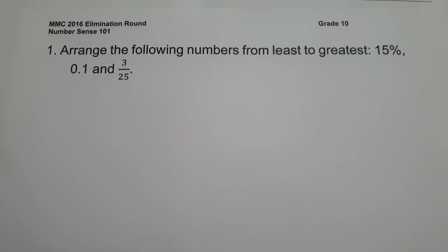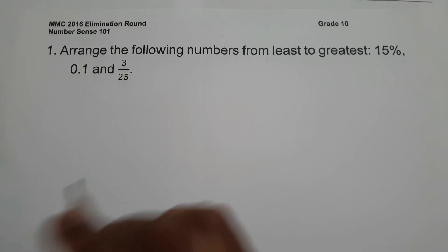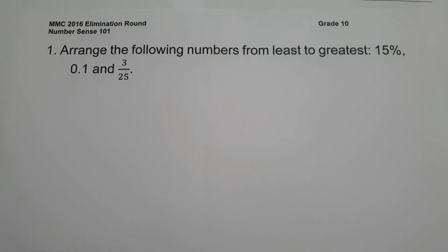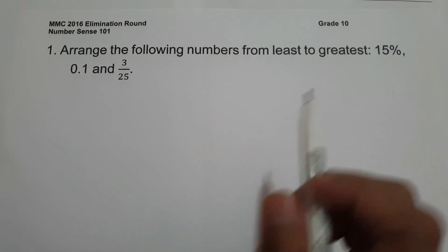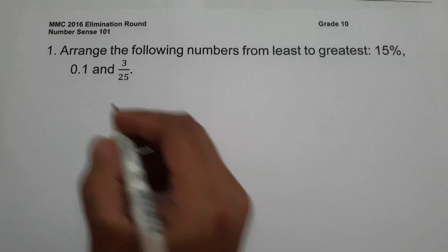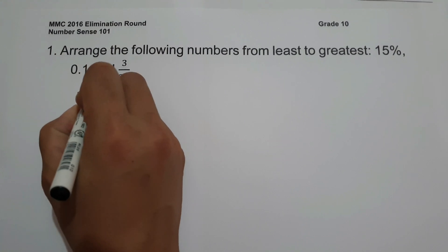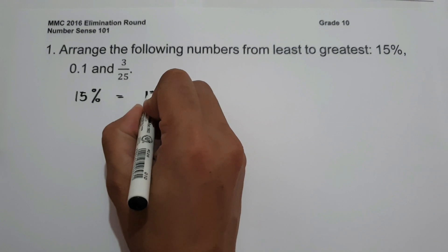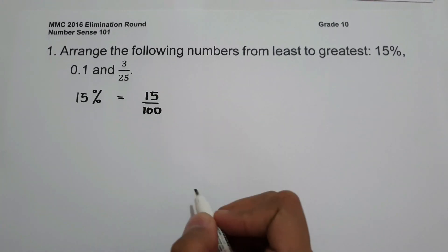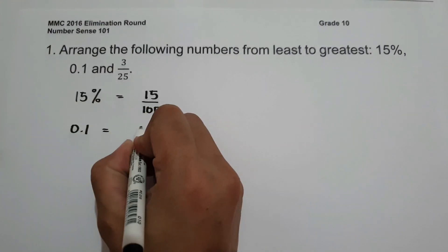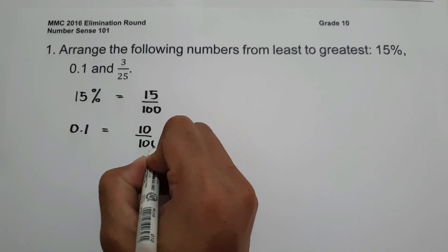On number 1, arrange the following numbers from least to greatest: 15%, 0.1, and 3 over 25. So how can we arrange these numbers? We are going to change the given into fractions. Let us express 15% as 15 over 100, and 0.1 as 10 over 100.